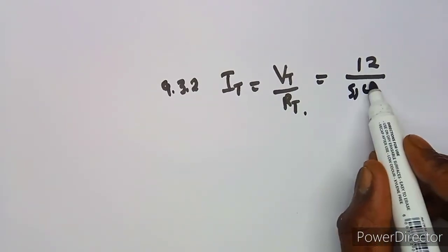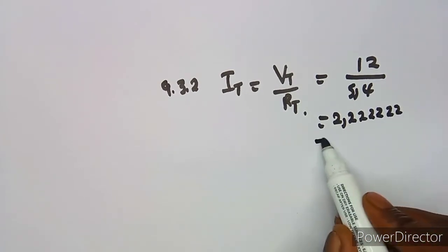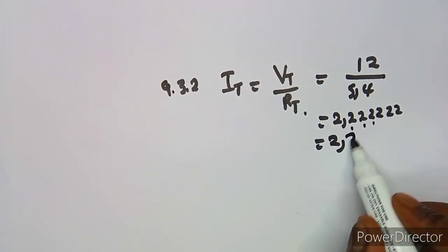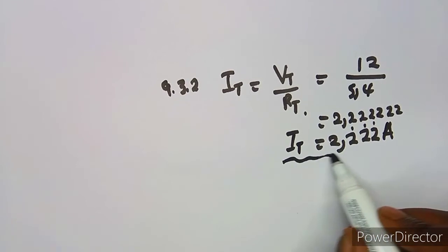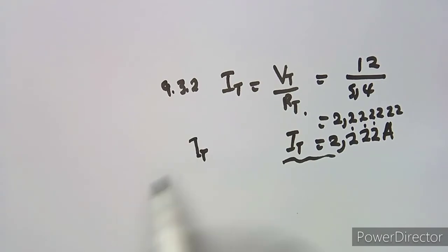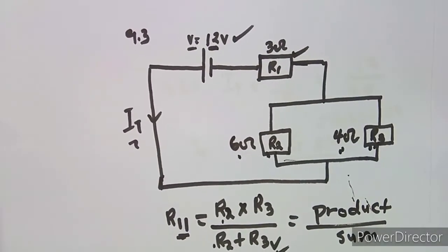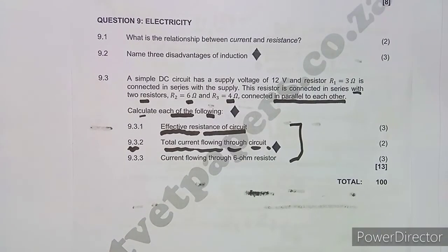Dividing 12 by 5.4 gives approximately 2.222 amps, which we round off to 2.22 amps. That is your total current, I_total. That's how you attempt these questions. Now for 9.3.3, we need to find the current flowing through the 6-ohm resistor, which is R2, part of the parallel section of the circuit.